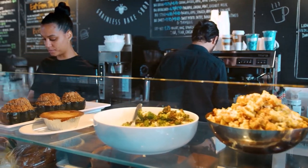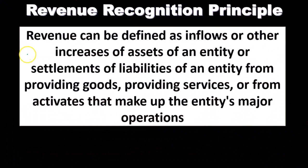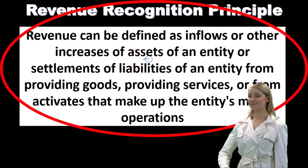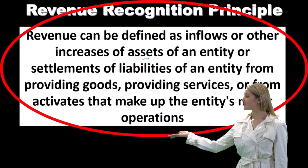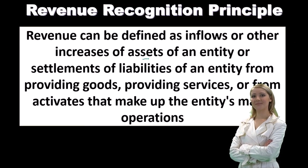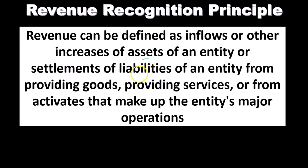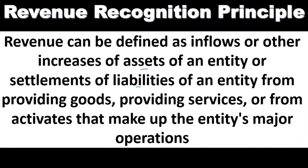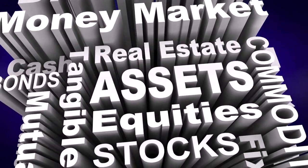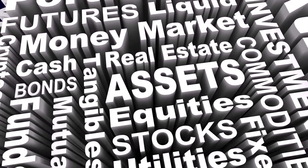Revenue can be defined as inflows or other increases of assets of an entity. There's some kind of inflow — and it doesn't have to be cash, because another inflow could be accounts receivable, for example, going up as we make a sale on account. It could also be the settlement of liabilities, which is often overlooked. It's quite possible that we make a sale and instead of receiving cash or accounts receivable, a liability is relieved — reducing a liability.